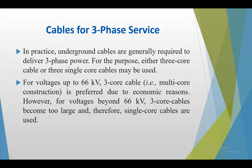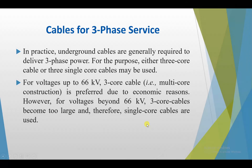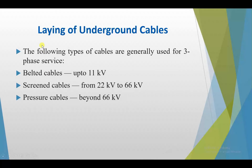For voltage beyond 66 kV, three-core cables become too large and therefore single-core cables are used, since cables are made of many components — conductor, sheath, screen, insulation — making them expensive. The types of cables generally used for three-phase services are: belted cable up to 11 kV, screened cable from 22 kV to 66 kV, and pressure cable beyond 66 kV.